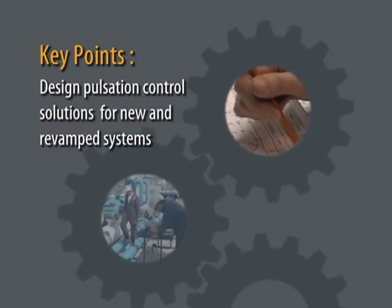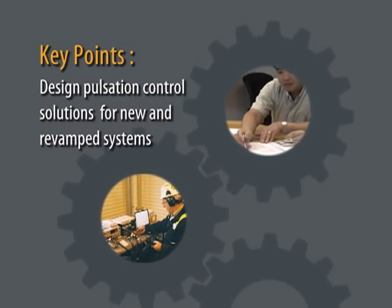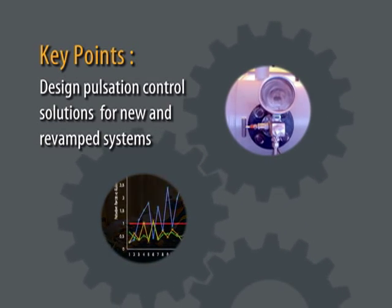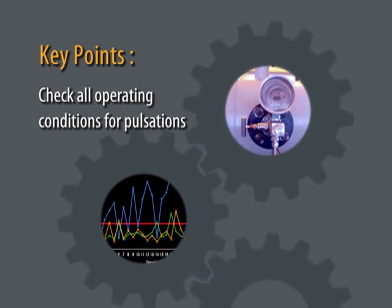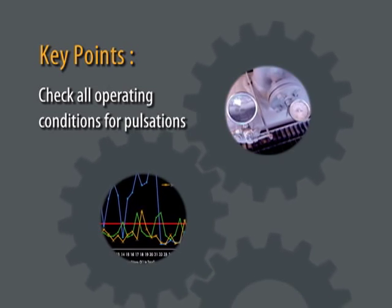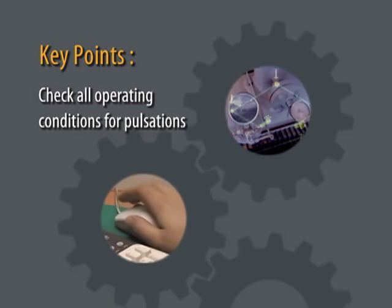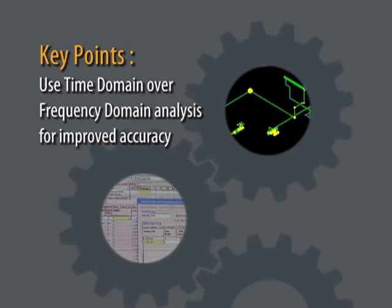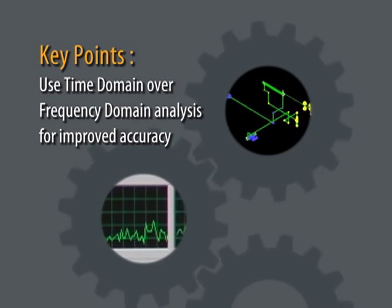Beta's role is to design a pulsation control solution that reduces pulsations to acceptable levels on new systems or revamps. When doing a pulsation study, it is important to check all operating conditions for pulsations, including the adequate speed range for fixed and variable speed applications. Time domain modeling techniques should be used for improved accuracy over the older frequency domain approaches.